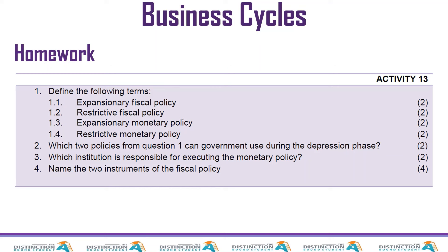We end the lesson by giving you some homework. Define the following terms: expansionary and restrictive. Which two policies from question one can government use during a depression? Try to think: if you were the finance minister or the governor of the Reserve Bank, when would you be restrictive and when would you be expansionary? Do you think during a depression it is the right time to implement an expansionary fiscal policy, or a restrictive one? Which institution is responsible for executing the monetary policy? Name the two instruments of the fiscal policy.